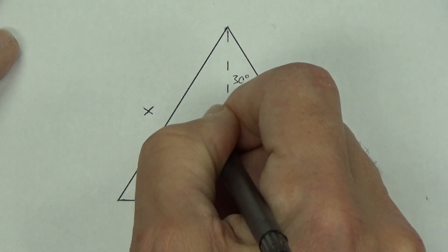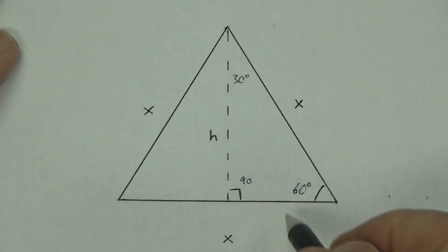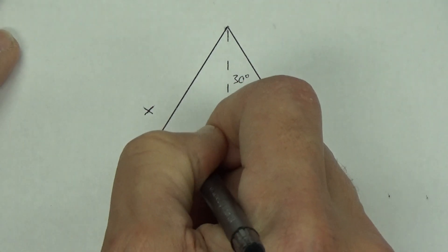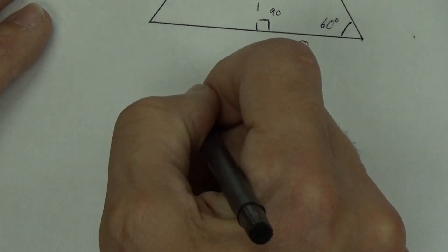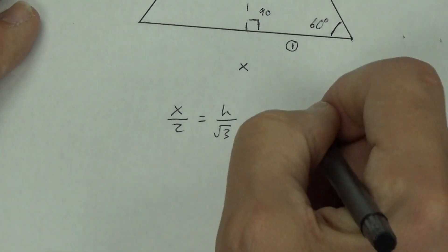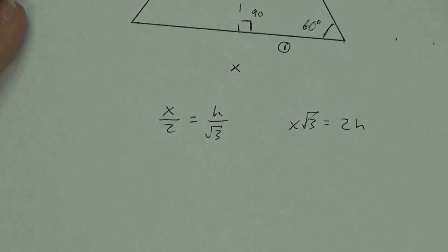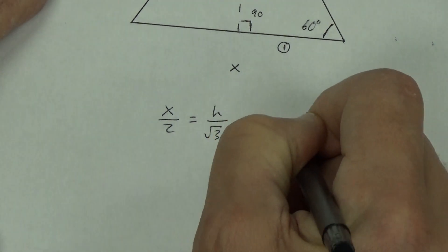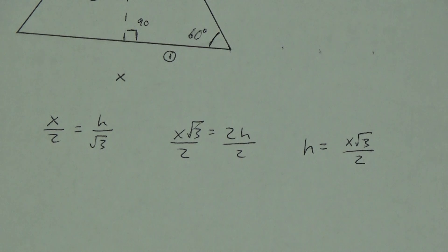I'm going to put H in for height and solve for H in terms of X. On a 30-60-90 triangle, the side opposite the 30 is 1, opposite the 60 is √3, and opposite the 90 is 2. So we set up the proportion: X/2 = H/√3. Cross multiplying gives X√3 = 2H. Dividing by 2 gives H = X√3/2.